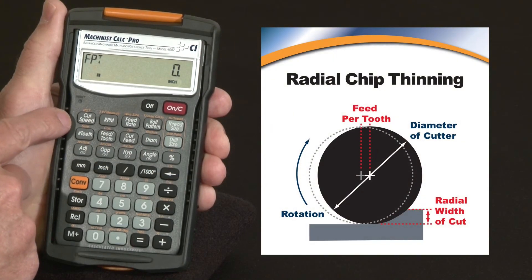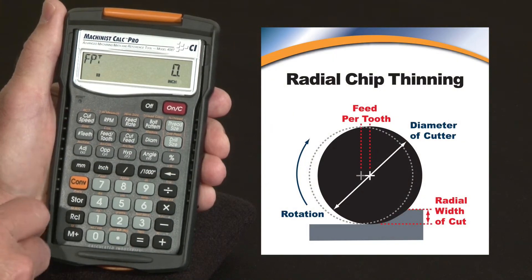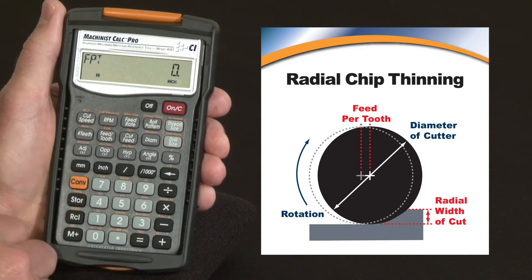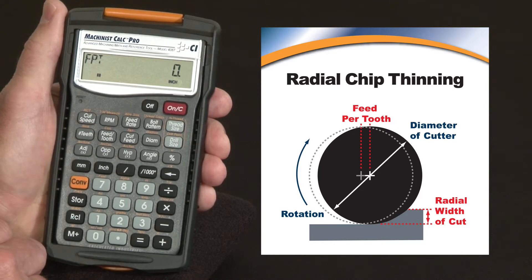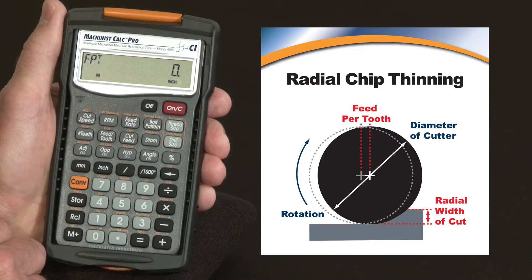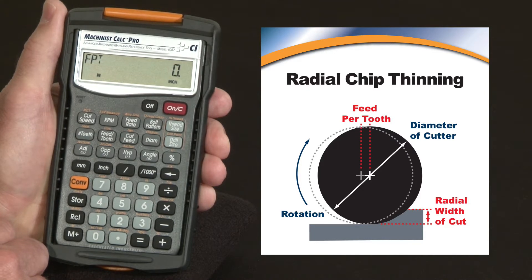Now this radial chip thinning feature is used to make adjustments to the feed per tooth when making light depth cuts. If cut depths are less than half the diameter of the tool, the tool is not cutting at the recommended chip load.